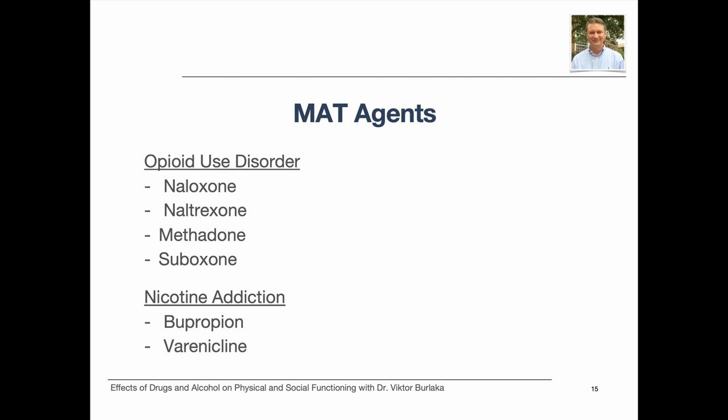Naltrexone, previously discussed for alcohol misuse disorder, is also used in MAT for opioid use disorder. It is an opioid antagonist that blocks the euphoric and sedating effects of opioids and reduces opioid craving; if a person taking naltrexone relapses, the reinforcing effect is blocked. Methadone has pharmacological effects similar to commonly misused opioids and allows prescribers to help a person gradually withdraw and taper off other opioids; it should be used in combination with behavioral interventions. Buprenorphine is a long-acting partial agonist at opioid receptor sites that does not produce the same euphoric or dangerous effects as commonly misused opioids, and may also be prescribed to manage chronic pain.